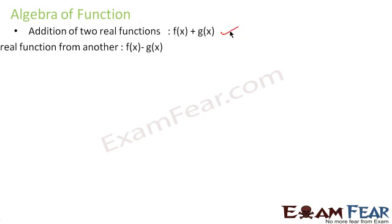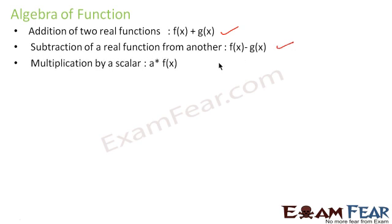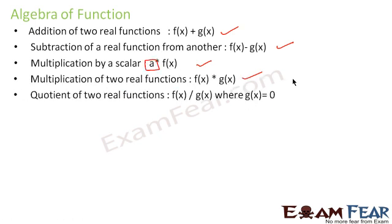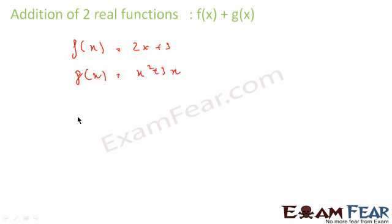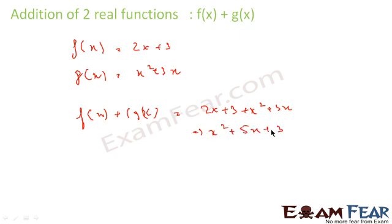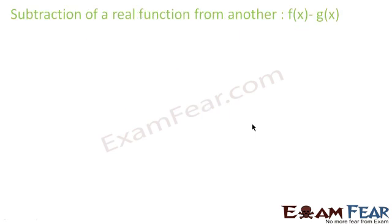We can add two real functions, subtract two real functions, multiply a function by a scalar, multiply two real functions, or divide two real functions — making sure the denominator is not zero. For addition: if f(x) = 2x + 3 and g(x) = x² + 3x, then f(x) + g(x) = x² + 5x + 3.